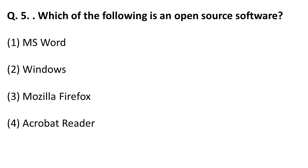The next question: which of the following is an open source software? Open source software does not require a key to activate. MS Word, Windows, and Adobe Acrobat are not open source. Mozilla Firefox is open source software.